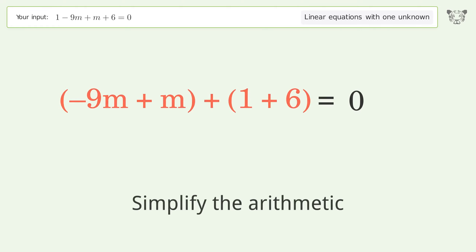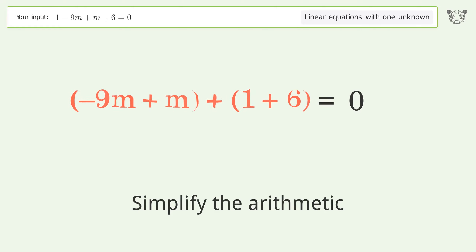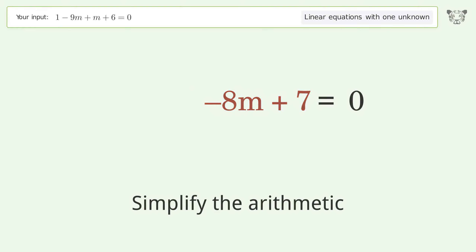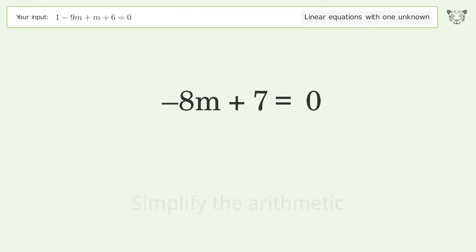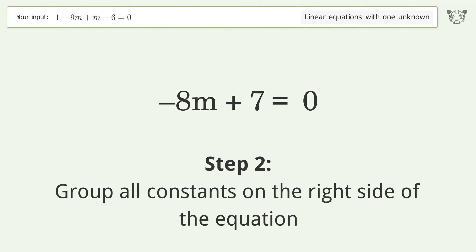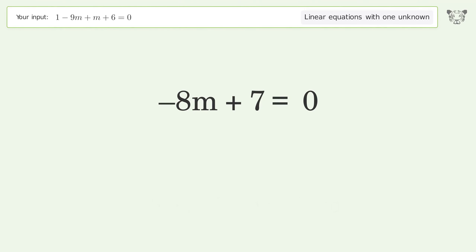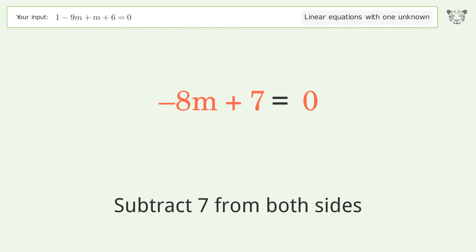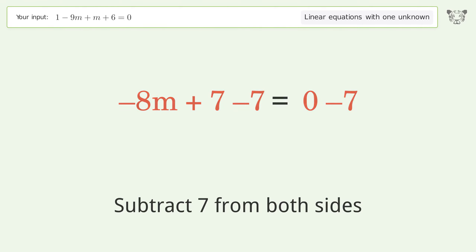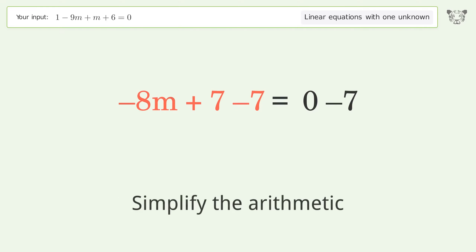Simplify the arithmetic. Group all constants on the right side of the equation. Subtract 7 from both sides. Simplify the arithmetic.